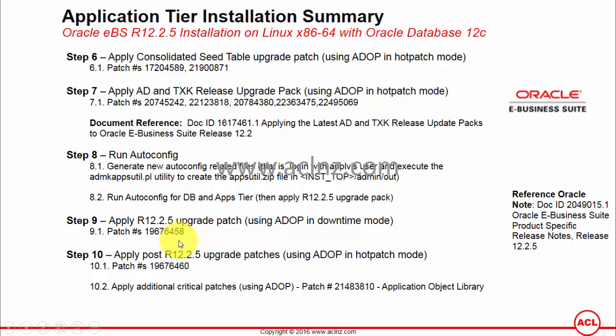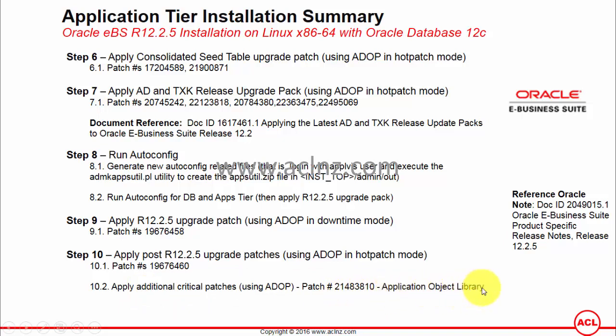Once the mega patch has successfully completed, apply a number of post-upgrade patches. This includes patch number 19676460, pertaining to Oracle E-Business Suite Help, applied using ADOP in hot patch mode. The last patch to apply is an additional critical patch, 21483810, related to Application Object Library. Oracle has also listed other patches pertaining to individual products, which you should apply depending on which products you are implementing.